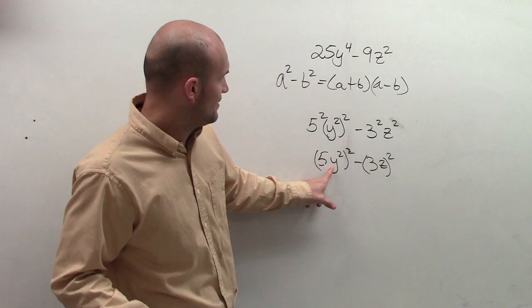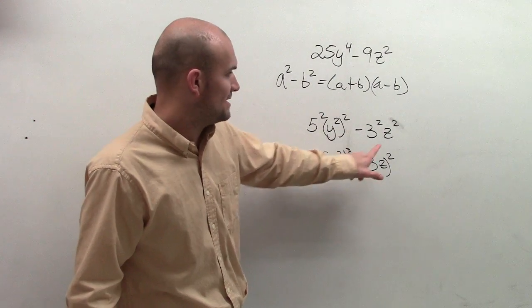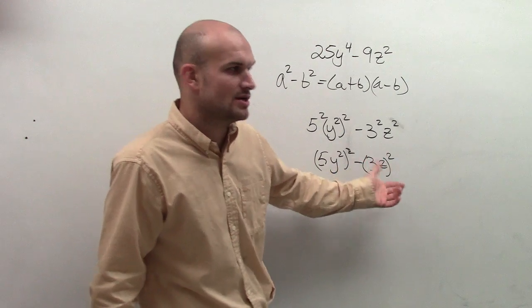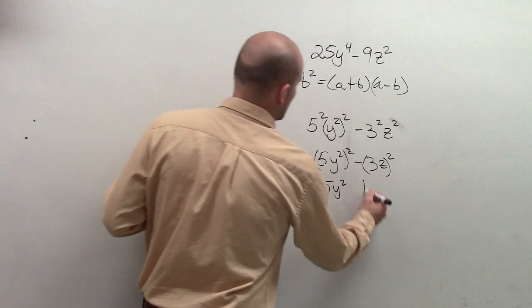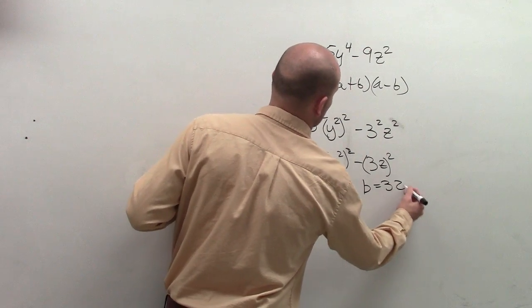So now as I've written it like this, you guys see how I have a squared minus b squared. I have two squared terms where you can now say a equals 5y squared and b equals 3z.